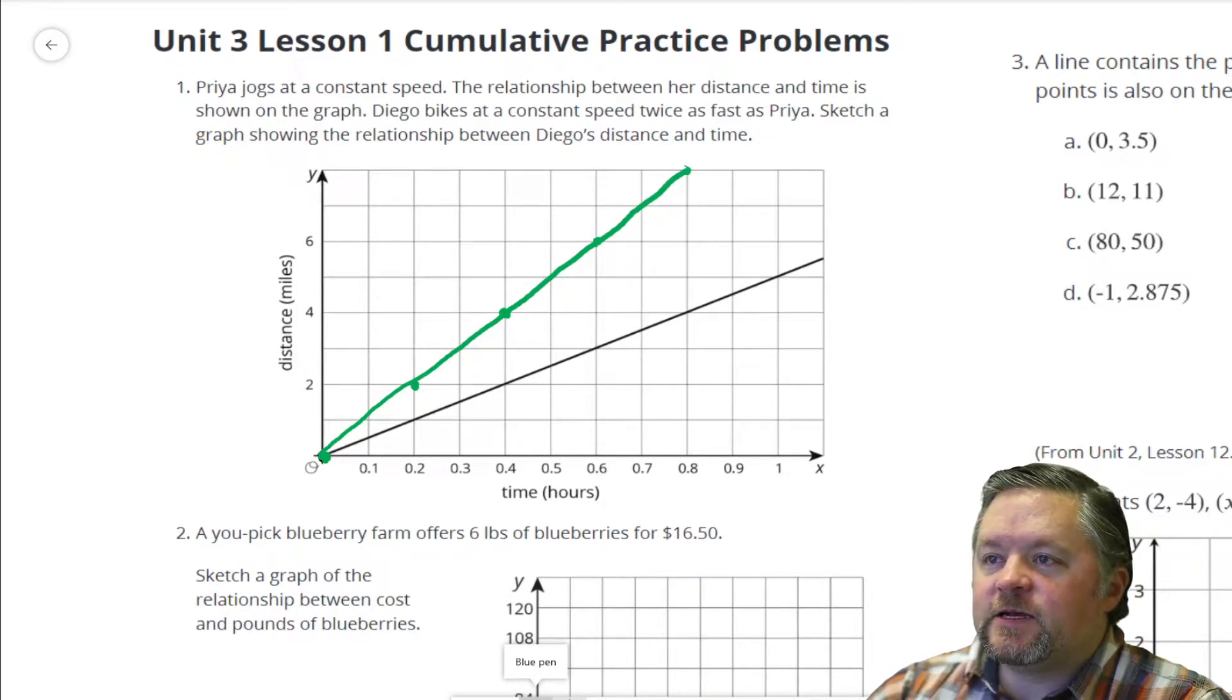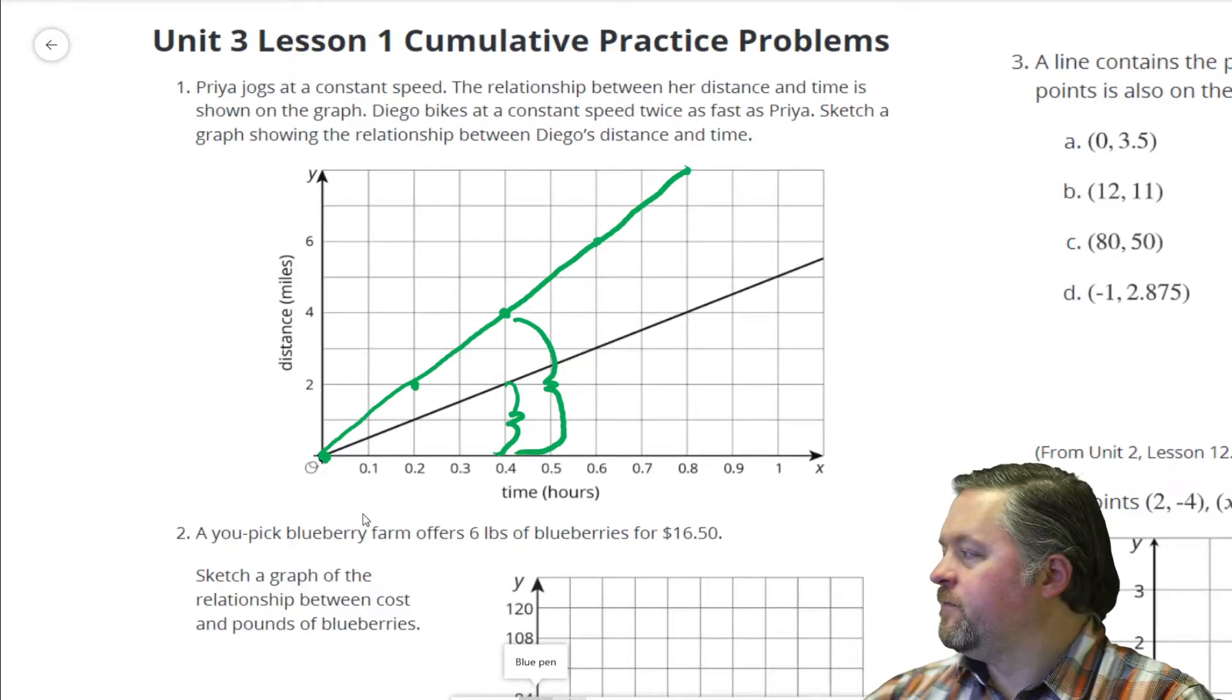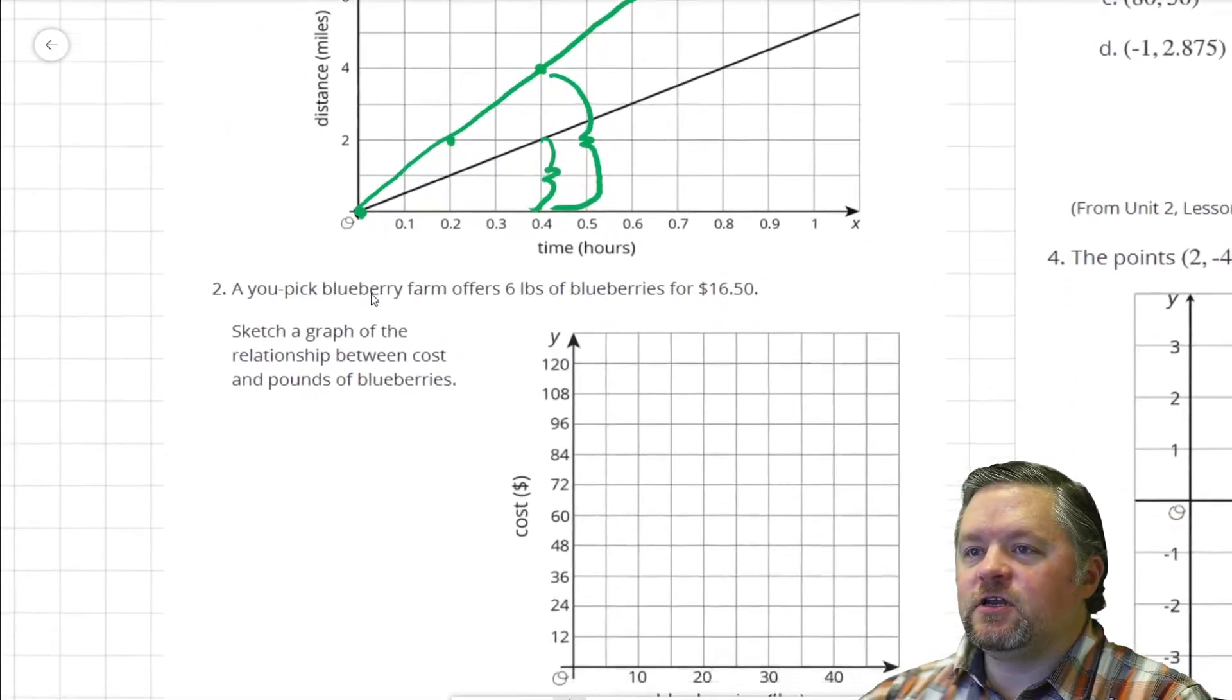Twice as fast just means these heights are double. Okay, next question here.